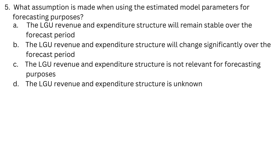Question 5: What assumption is made when using the estimated model parameters for forecasting purposes? a. The LGU revenue and expenditure structure will remain stable over the forecast period. b. The LGU revenue and expenditure structure will change significantly over the forecast period. c. The LGU revenue and expenditure structure is not relevant for forecasting purposes. d. The LGU revenue and expenditure structure is unknown.